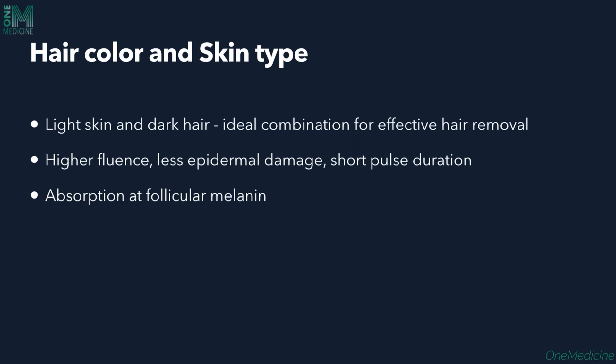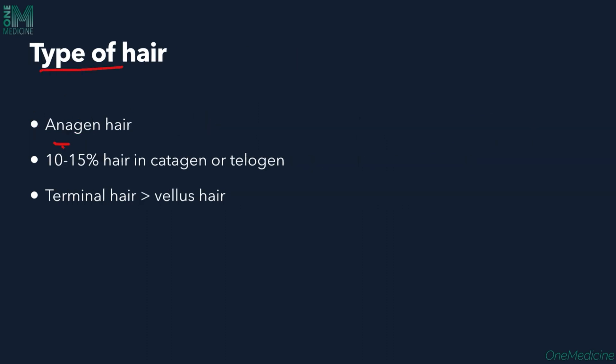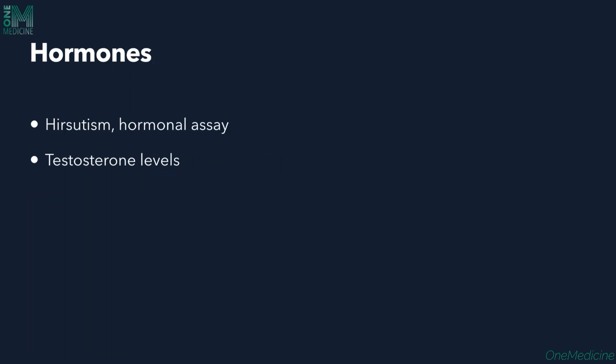Light skin and dark hair is best suited for laser hair removal, because light skin people have less epidermal melanin and dark hair has more melanin in the hair follicle — this effectively damages the hair follicle without causing epidermal injury. Higher fluence and less epidermal damage with short pulse duration can be used, as absorption happens at the follicle melanin level. Anagen hair is important, and 10–15% of hair will be in catagen or telogen, so you can't remove 100% of hair at one sitting. Terminal hair is better affected with laser than vellus hair because of more pigment.